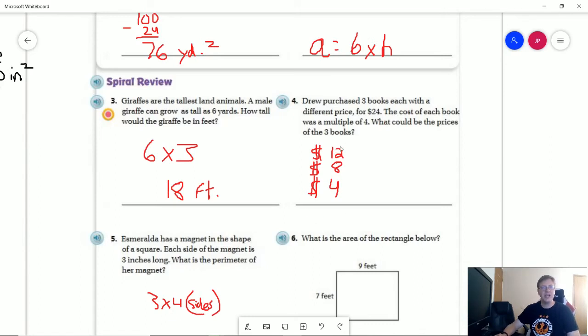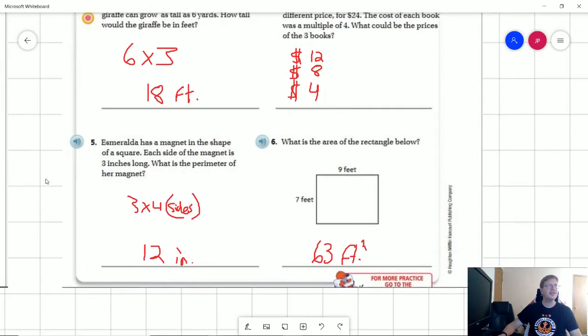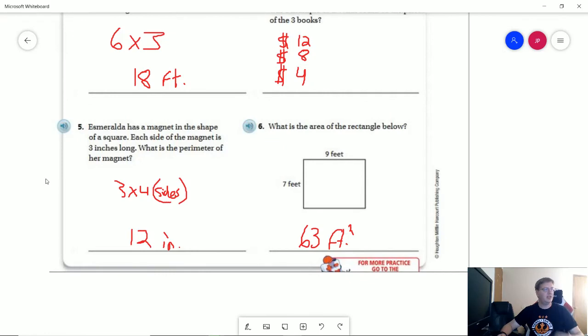For number 4, this is the only way I can think of that would actually work to have 3 books. If I used a larger number 16, I would have 2 repeating books that were a multiple of 4 and it says that all 3 books each have a different price. And so this is the only way that it seems like actually works out if we're going to do 3 different multiples of 4.